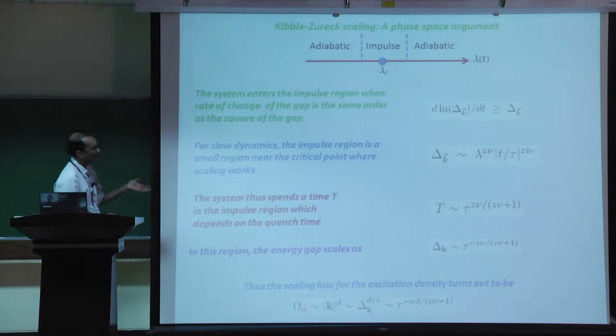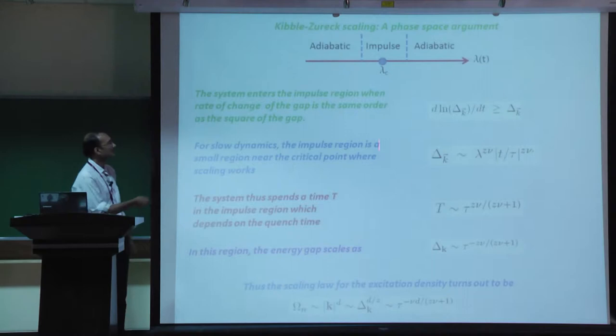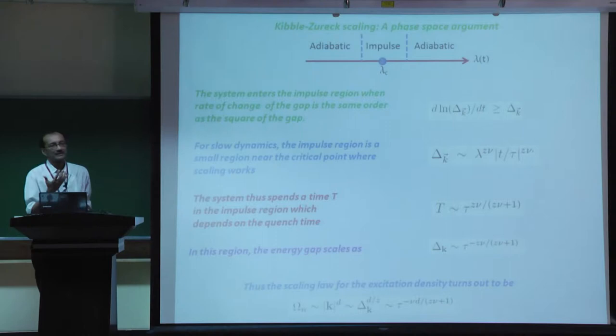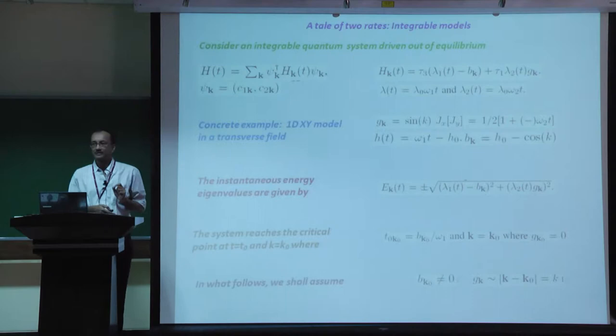This argument, which Anatoly essentially made in his 2005 paper with similar arguments also given by Damski, Zurek and others, tells you that there is a universal scaling of the number of excitations for any quantum system as you go through the critical point. Now let us go to the two-rate protocol.